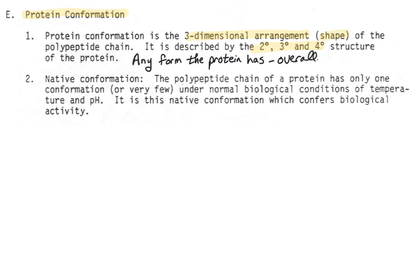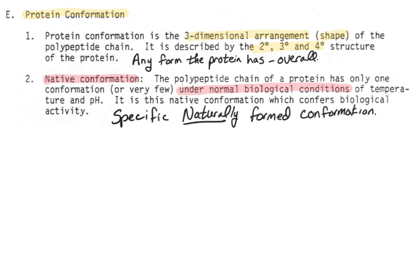What we call the native conformation is the way that the protein comes out in its natural form. That means under normal conditions such as temperature and pH, this is the shape that we'll find a protein in, as long as we haven't done anything else to it. The native conformation gives it all of its biological activity. There are generally only one or two shapes in a native conformation, depending on whether something is there to bind.